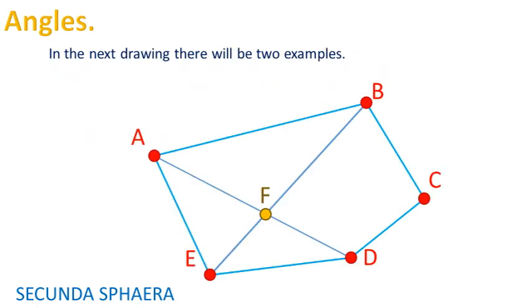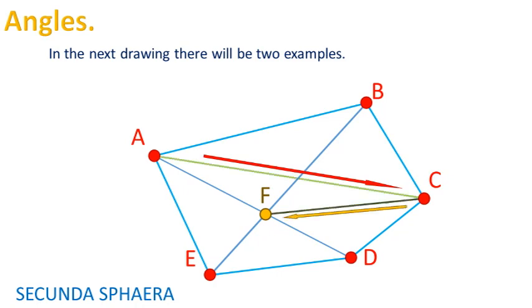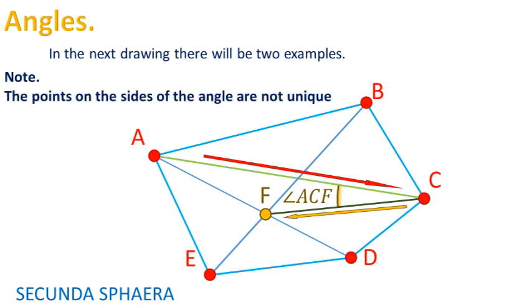In the next drawing, there will be two examples of this technique. First, start with the point A, then draw segment AC, draw segment CF. This is the angle ACF. The vertex is in the point C. It is important to mention that the points on the sides of the angles are not unique and do not have order.